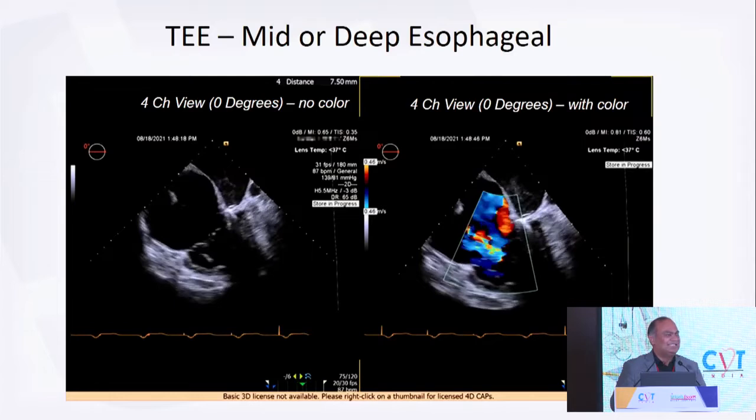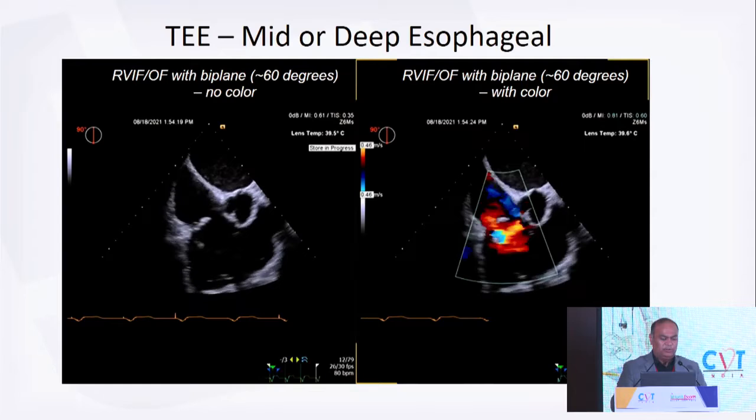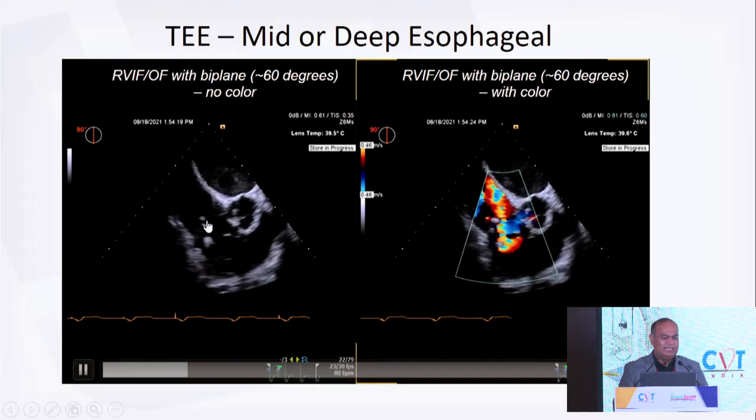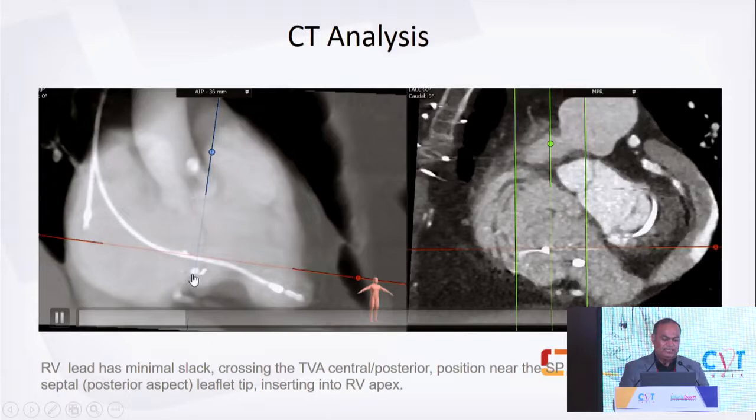TEE mid-esophageal views: four-chamber view with severe TR. Inflow-outflow view: tricuspid on one side with the TriLine pledget visible, pulmonic valve on the other side — severe tricuspid regurgitation right by the pacemaker lead. CT analysis shows the TriLine annuloplasty and pacemaker lead traversing through. The valve annulus was 48-46mm giving 8 and 13% oversizing. Pre-procedure CT provides schematic diagrams predicting catheter flexion, IVC-to-annulus relationship, and depth limitations.